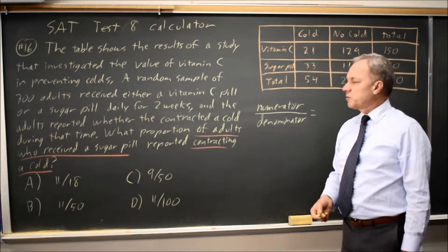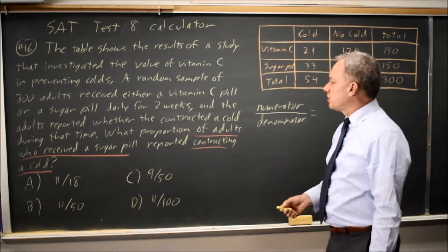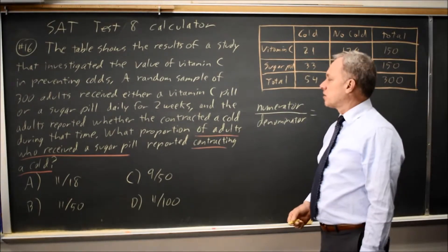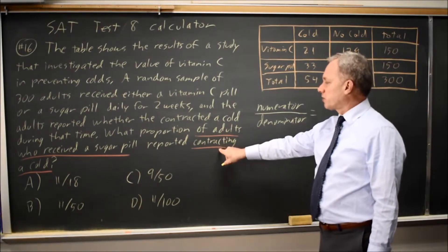And then once you've identified the denominator, the question is, of those individuals, so from that row or from that column, how many are they asking about that you're looking for the probability of occurring?